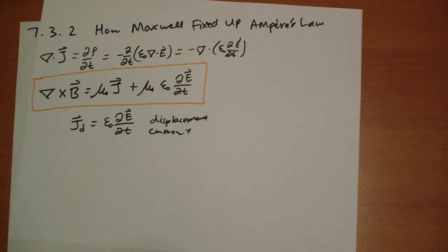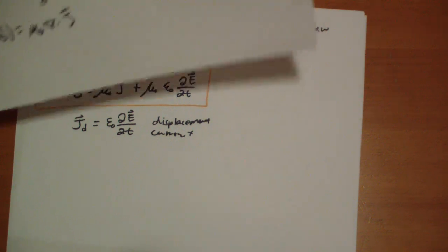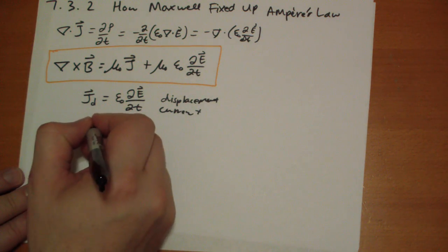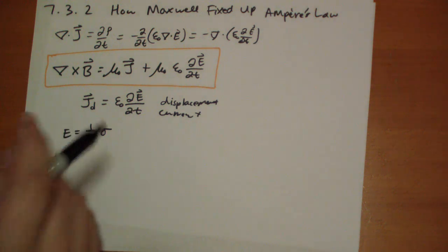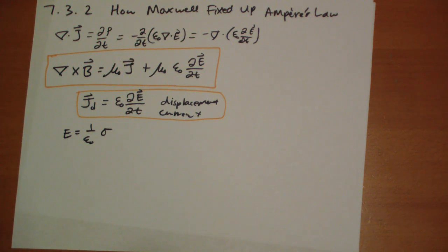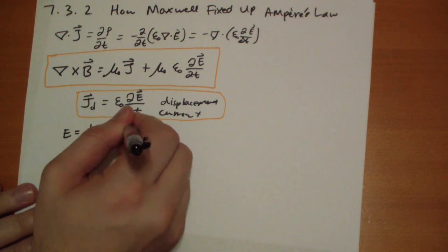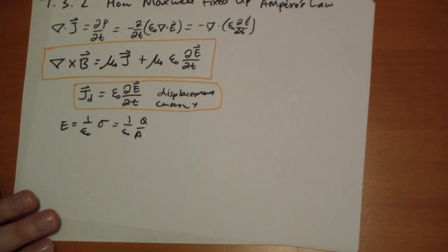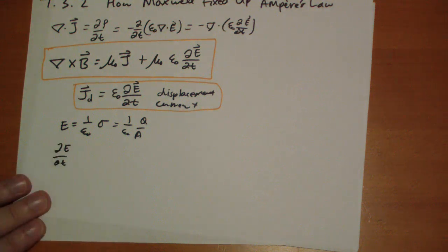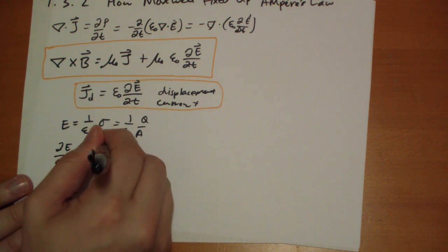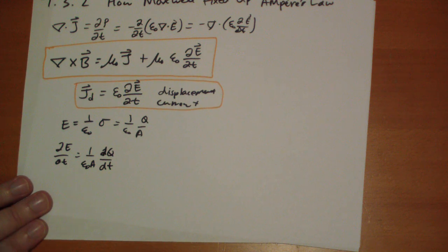In our example with the capacitor plates, let's go back to our odd loop and bring the plates close together so we have a uniform electric field in between. The electric field between the plates is going to be 1 over epsilon naught times sigma, the charge density — that is going to equal 1 over epsilon naught times the total charge divided by the area of one of the plates. So the change in the electric field between the plates is going to be 1 over epsilon naught A times the change in charge on the plate over time, and that's just the current.